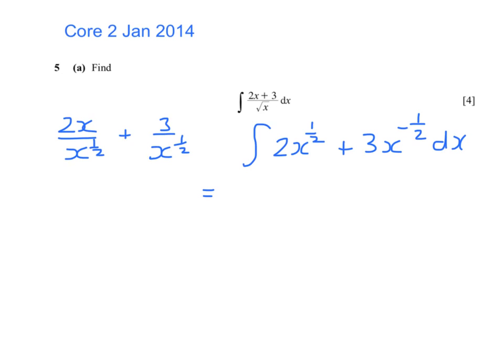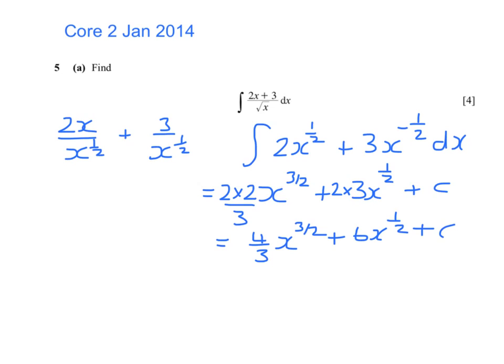Integrating, we add 1 to the power, so that's going to give us x to the power 3 over 2. And divide by the new power, well that's the same as multiplying by 2 thirds. If we add 1 to the power, we get a half. Dividing by a half is the same as multiplying by 2. And then we have the plus c. So I have 4 thirds x to the power 3 over 2 plus 6x to the power half plus c.